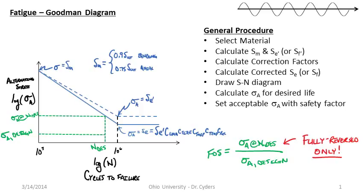We have this way to calculate factor of safety: the alternating stress at the desired number of cycles divided by the design alternating stress. This is only valid for fully reversed stresses. If we want to account for a non-zero mean stress — where we don't have the perfect lab test situation — then we need to change our procedure.